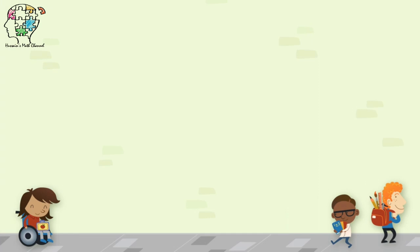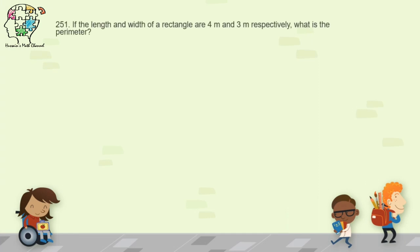Question 251: if the length and width of a rectangle are 4 meters and 3 meters respectively, what is the perimeter? The perimeter is (4 plus 3) times 2. 4 plus 3 equals 7, times 2 equals 14 meters.